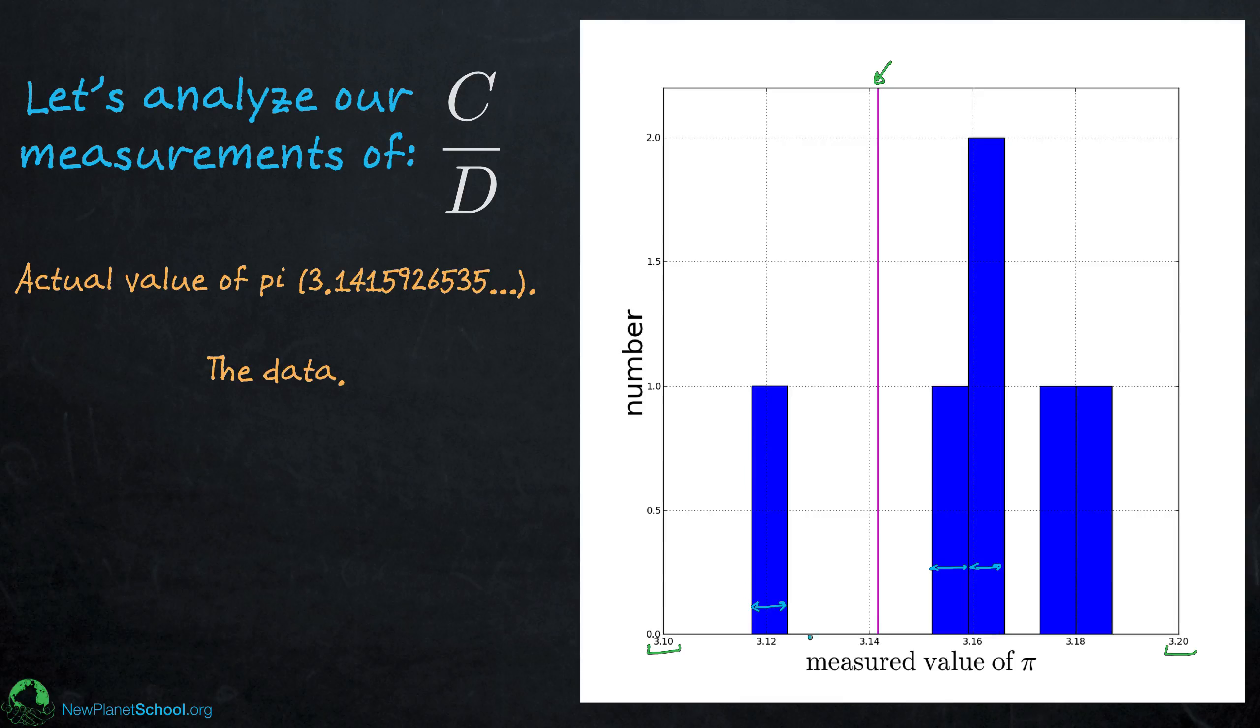Some were high, some were low, but they all fell very close. Now if we take our six measurements and find the average, which is the number you would typically want to report to somebody, we get this red line here. And so our value, this is our value here, this is our value of pi, is not very far from the actual value. It's not too bad.